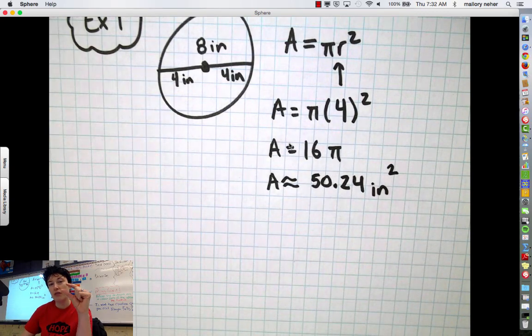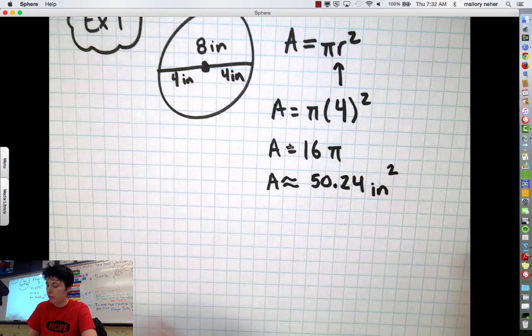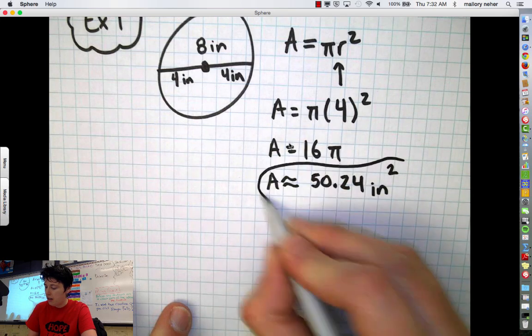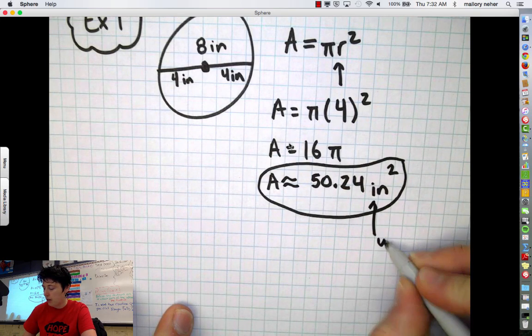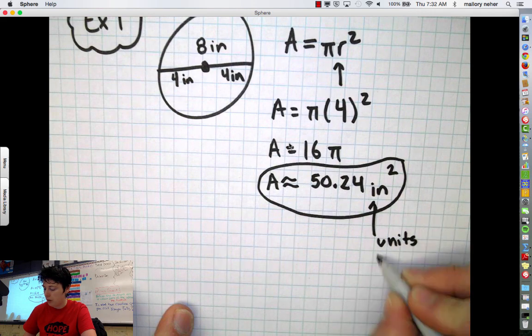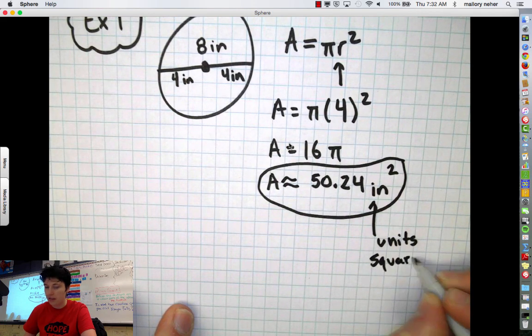It's a measurement of those squares that fit inside the circle. So be sure when you're doing area not to forget units squared. And then I'm going to write that down here. Units squared. The little squares that fit inside the circle.